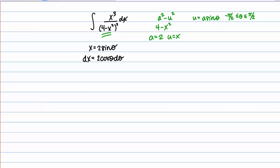Now we can rewrite the integral in terms of theta. In the numerator we have x cubed, so that's going to become 2 sine of theta, quantity cubed. In the denominator, 4 minus x squared quantity squared becomes 4 minus the quantity 2 sine of theta squared, all of that squared. And for dx we substitute 2 cosine of theta d theta.